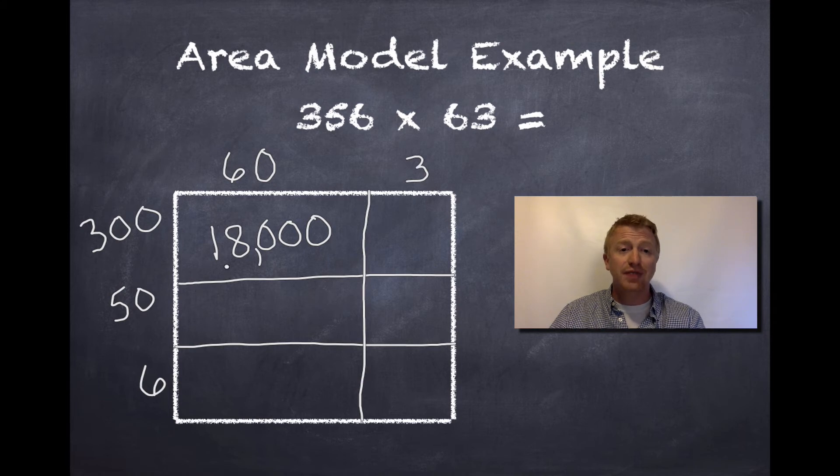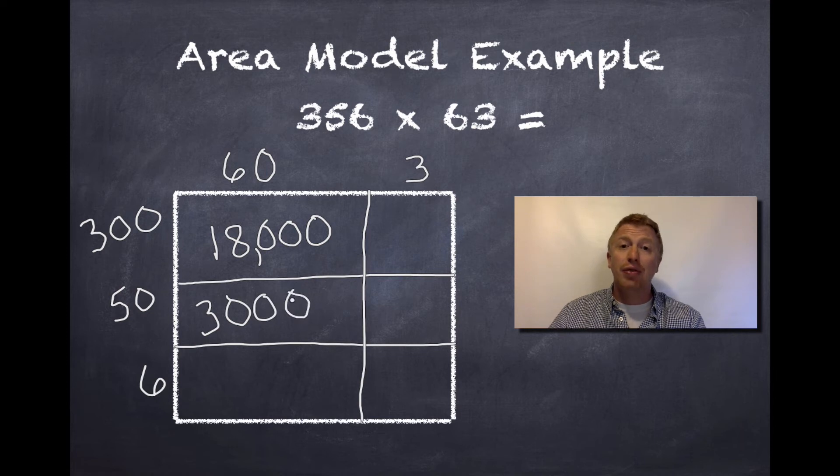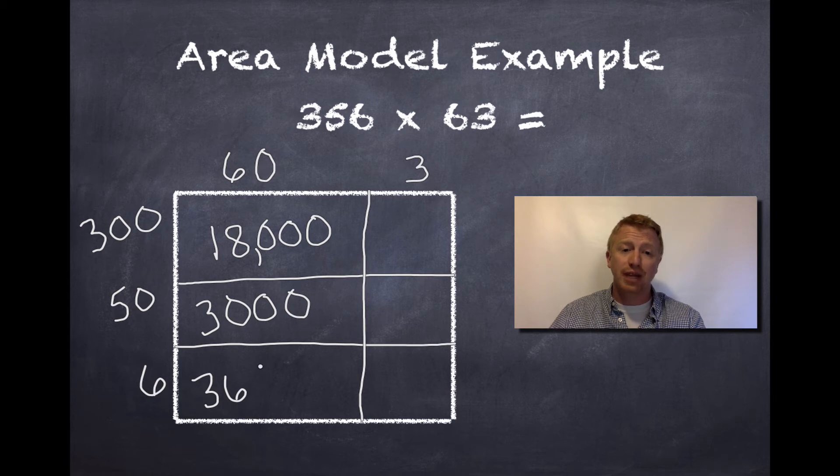60 times 50. 60 times 5 is 30, and the two zeros between my two factors, I'm going to put at the end. I got 3,000. Last, I'm going to do 60 times 6. 6 times 6 happens to be 36, and I'm going to represent this zero from the factor in my answer.